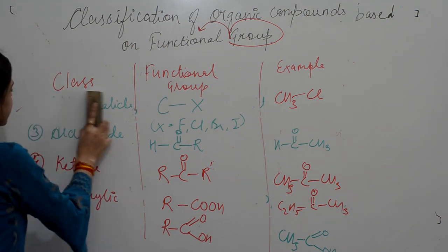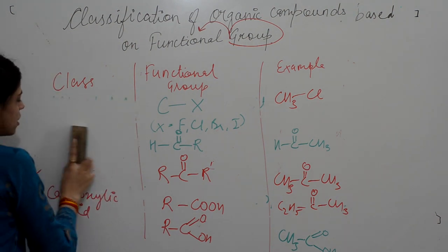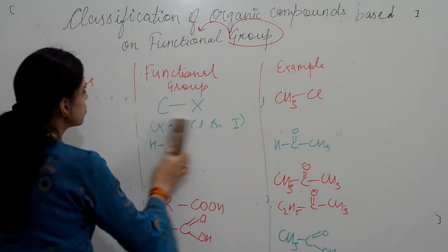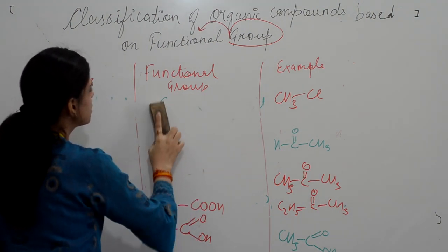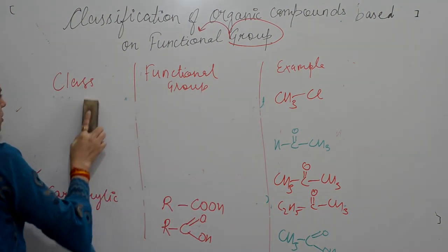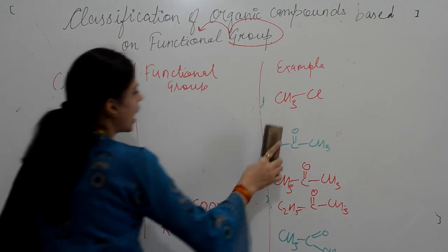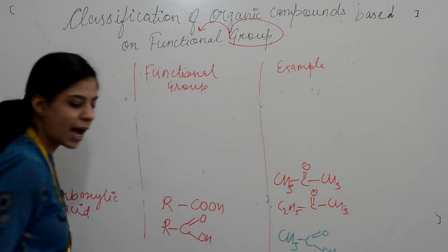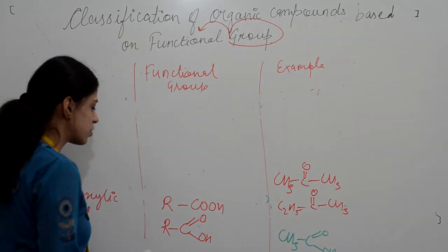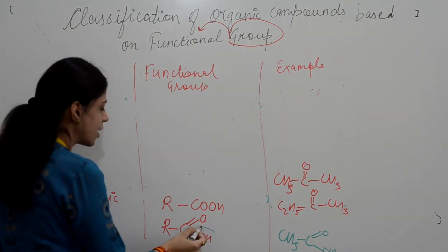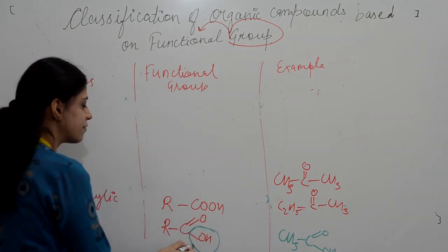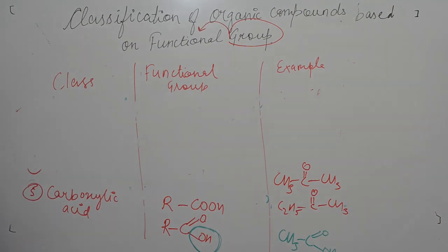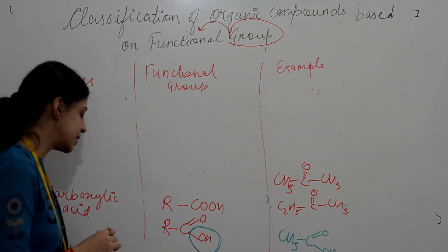Now we will see the derivatives of carboxylic acid. Derivatives are compounds in which some part of the group is replaced by another group. In carboxylic acid, the hydroxyl part is replaced by a different group, and the new products formed are known as its derivatives.